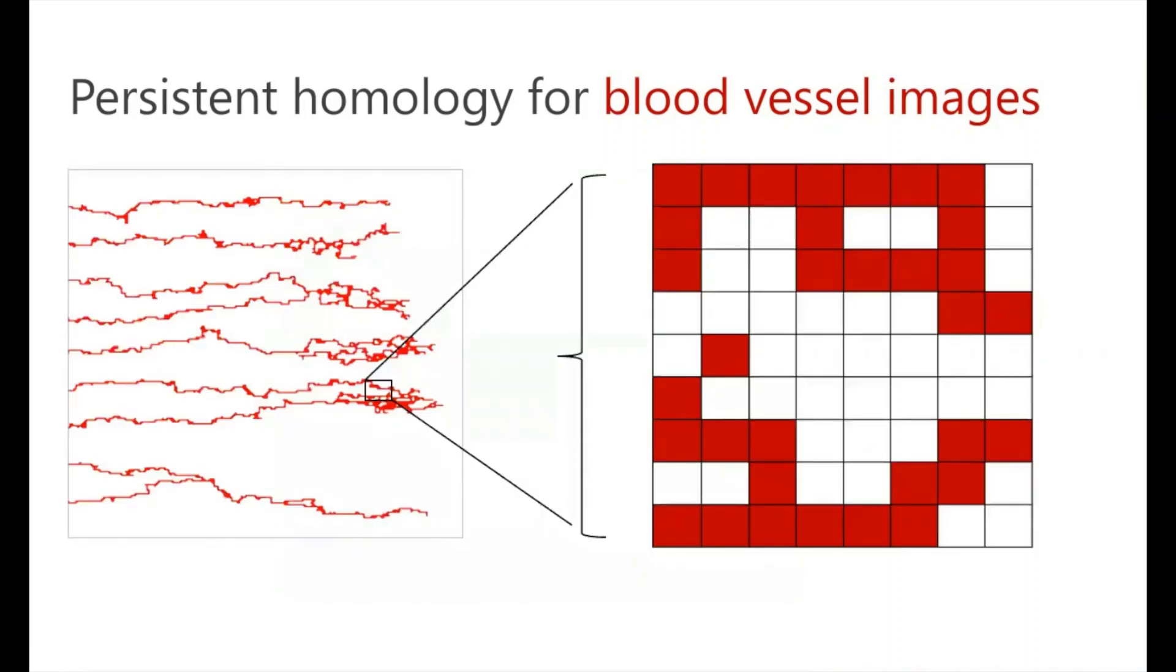Now if we zoomed in on this image from our mathematical model, what we're going to observe is that this image is a binary image where the red pixels denote the presence of blood vessels and the white pixels denote the absence of these blood vessels. And so our goal is to talk about one way to compute the persistent homology of these blood vessel images, but note that there are many plausible ways to do this.